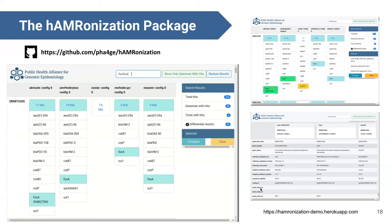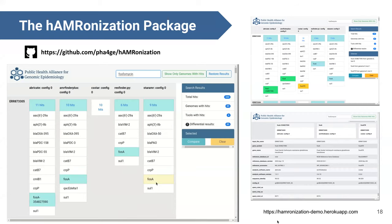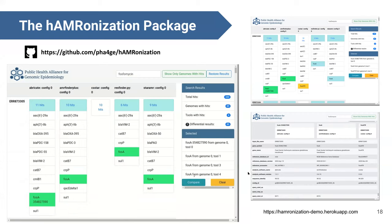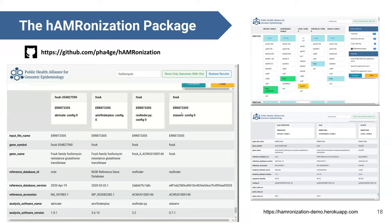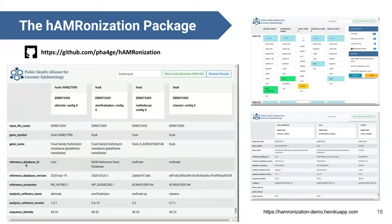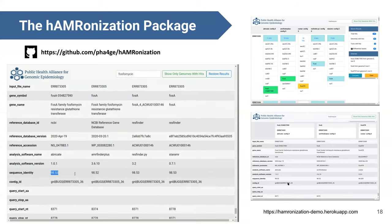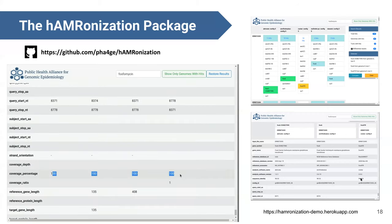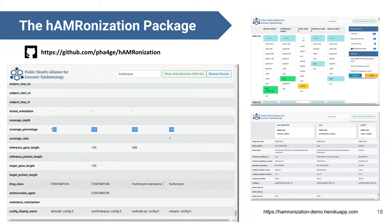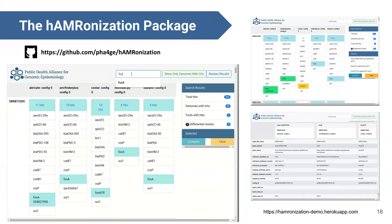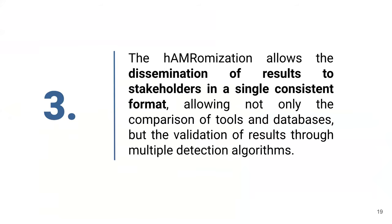You can select genes of interest — for example, searching for the phosphomycin resistance gene fosA — and see that it was detected by four out of five tools, with one tool missing it. Clicking 'compare' gives you a table containing our standardized spec fields filled out for each entry. You can clearly see that some fields are empty depending on the method, and you can see slight variations in reported sequence identity across tools because different methods are applied. Take-home message: harmonization allows dissemination of results in a single consistent format.